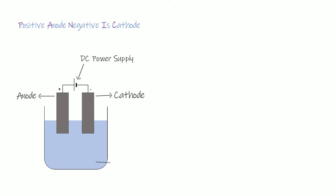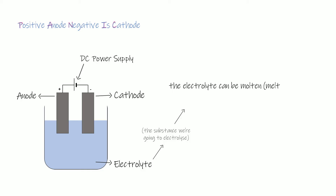In our beaker, in which we've submerged our electrodes, is the electrolyte — that's just the substance that you're going to do electrolysis on, the substance you're going to electrolyze in order to split it up. Your electrolyte can be one of two different types of liquid: it can either be a molten liquid, which means you've taken your solid ionic compound and melted it, or you could dissolve your solid ionic compound in water.